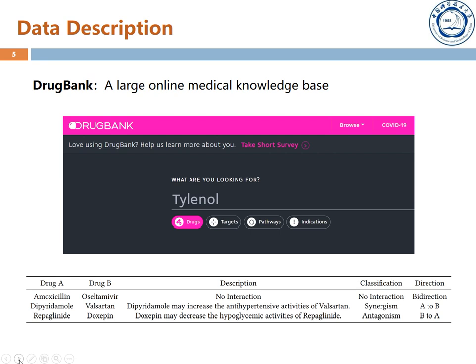In order to study the interaction between drugs, we collect data from a large online medical database named DrugBank, which is a knowledge base. Users can check drug properties and drug-on-drug interaction on DrugBank. The drug interaction information is stored in text format based on certain templates. We classify the templates into three categories: non-interaction, synergism, and antagonism. Note that the interaction has direction.